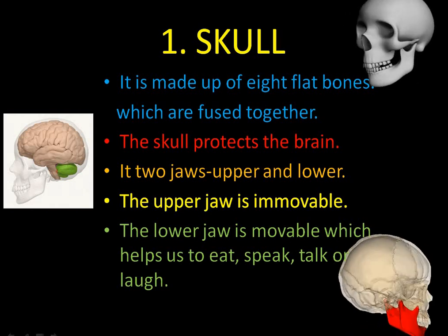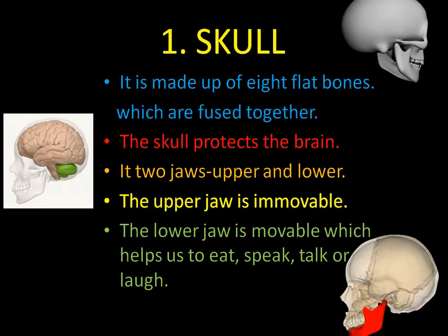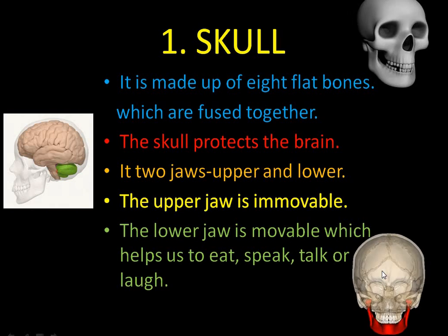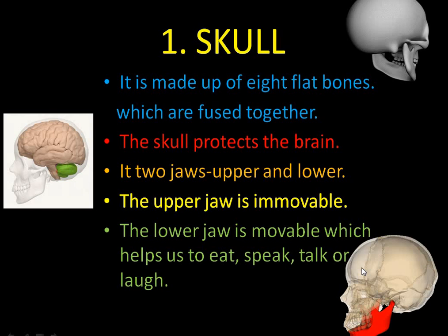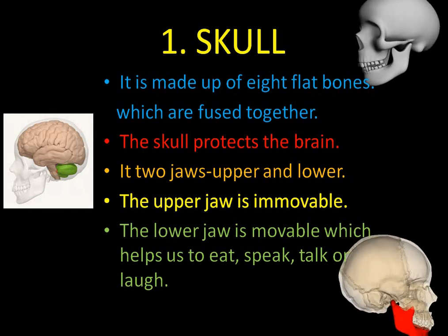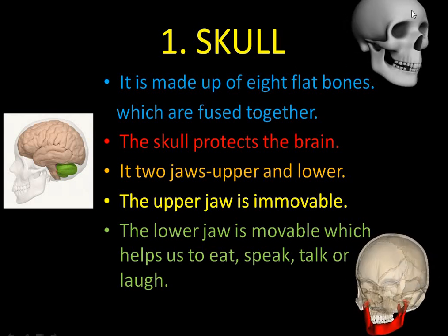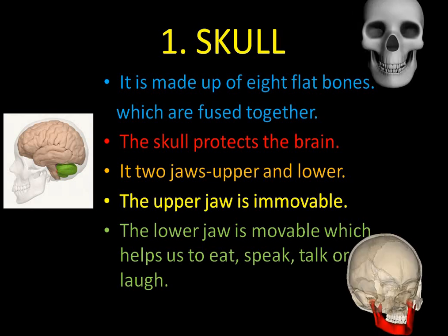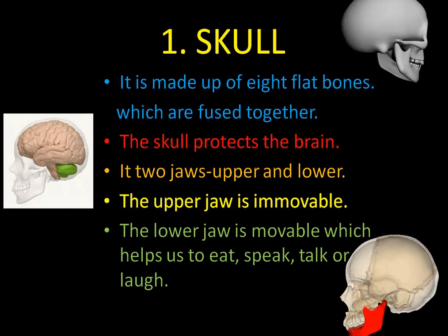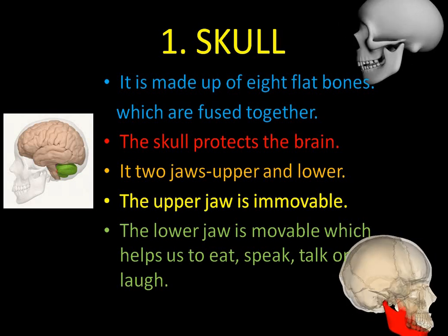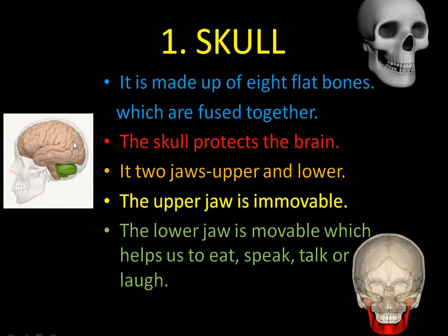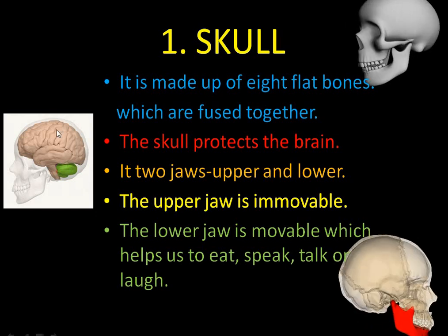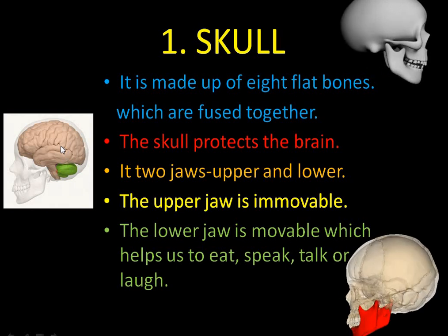First of all we'll do the skull. The skull is made up of eight flat bones — you can see the lines in this picture. These bones are present in your skull and they are fused together. There are eight flat bones fused together to make your skull. The skull protects the most delicate organ — your brain. It is a very hard object, and your brain is protected inside this skull. Your brain manages your thinking power and all body actions.